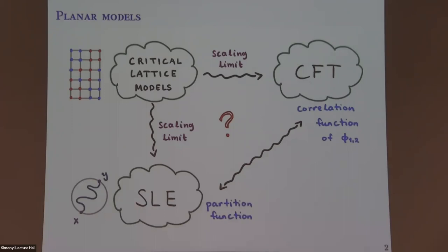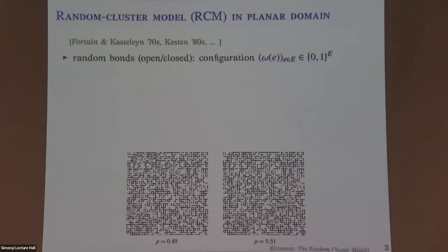You can look at geometric events in these critical lattice models, for instance crossings. These can be encoded in interfaces, which are described by conformally invariant random curves from Schramm-Löwner evolutions (SLE) in the scaling limit. That's one way to make rigorous sense of conformal invariance of geometric quantities. The punchline of my talk is that there is some correspondence between certain observables for SLE and correlation functions in CFT — things appearing in the physics literature match with rigorously proven scaling limit results.